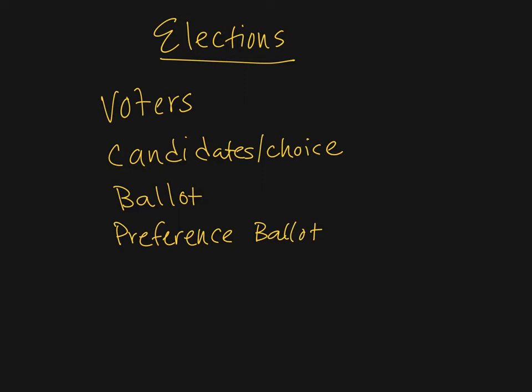We're going to talk about those ways in future sections — we need all the information from a preference ballot in order to do that. A preference schedule is the book's term for writing down all the voters' preferences in one commonly grouped table of information.